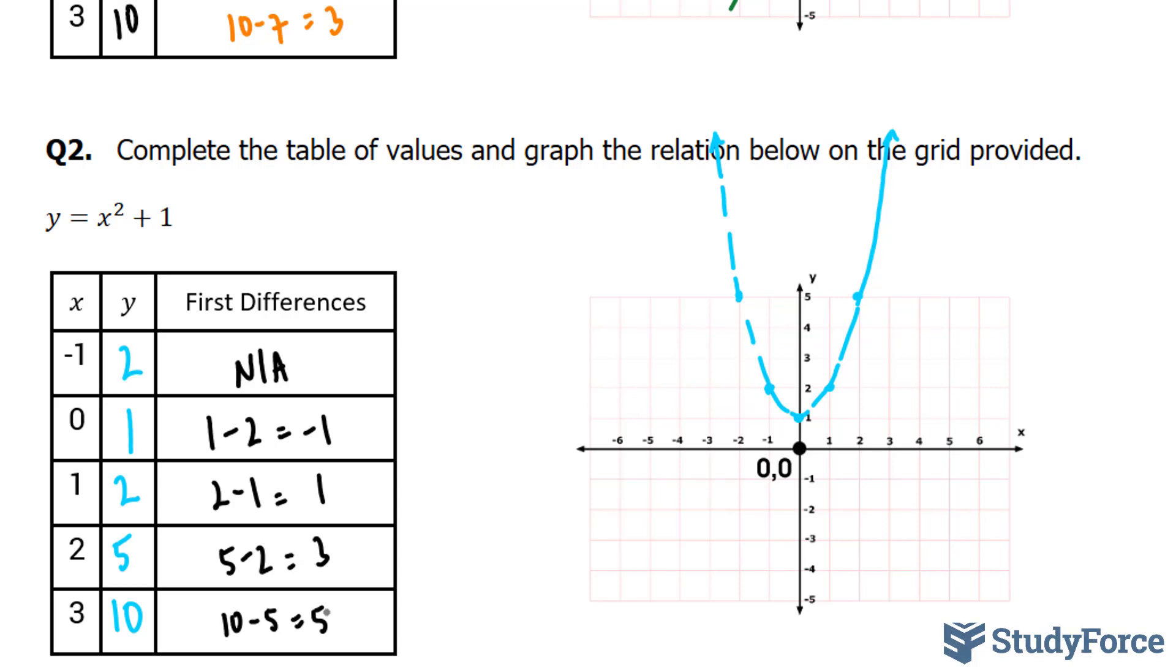But if we were to take the second differences, which means we subtract these y's from each other, we'll end up with something special. Let me show you what I mean. 1 minus negative 1 is equal to 2. 3 minus 1 is equal to 2. And 5 minus 3 is equal to 2. Notice the consistency.